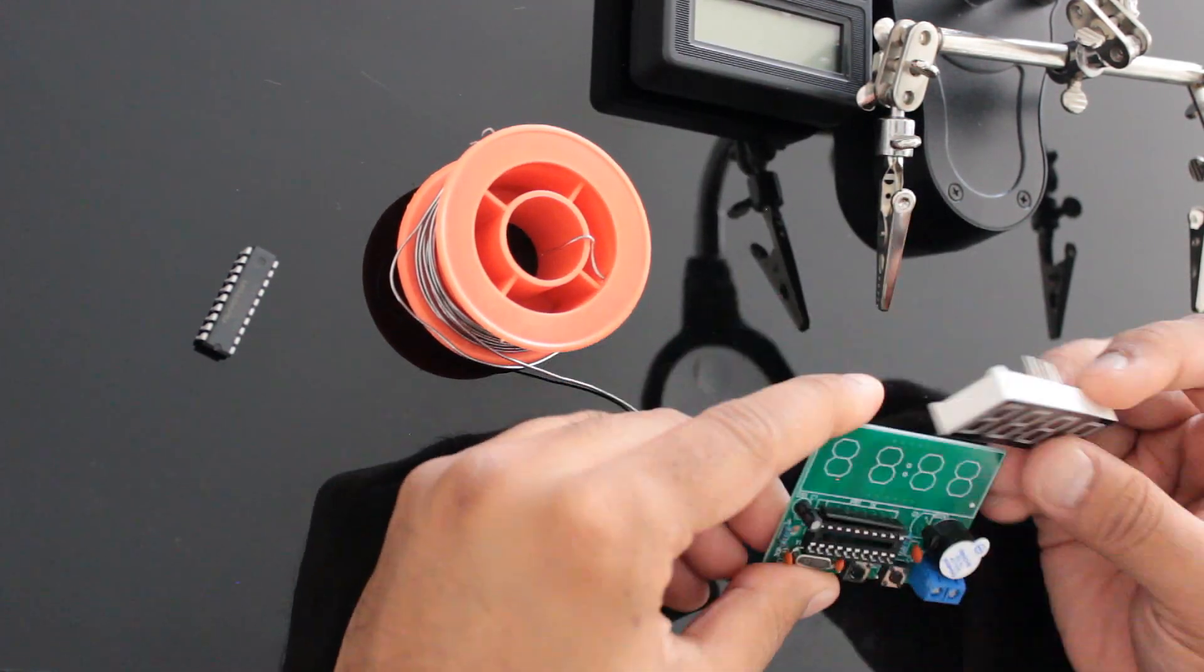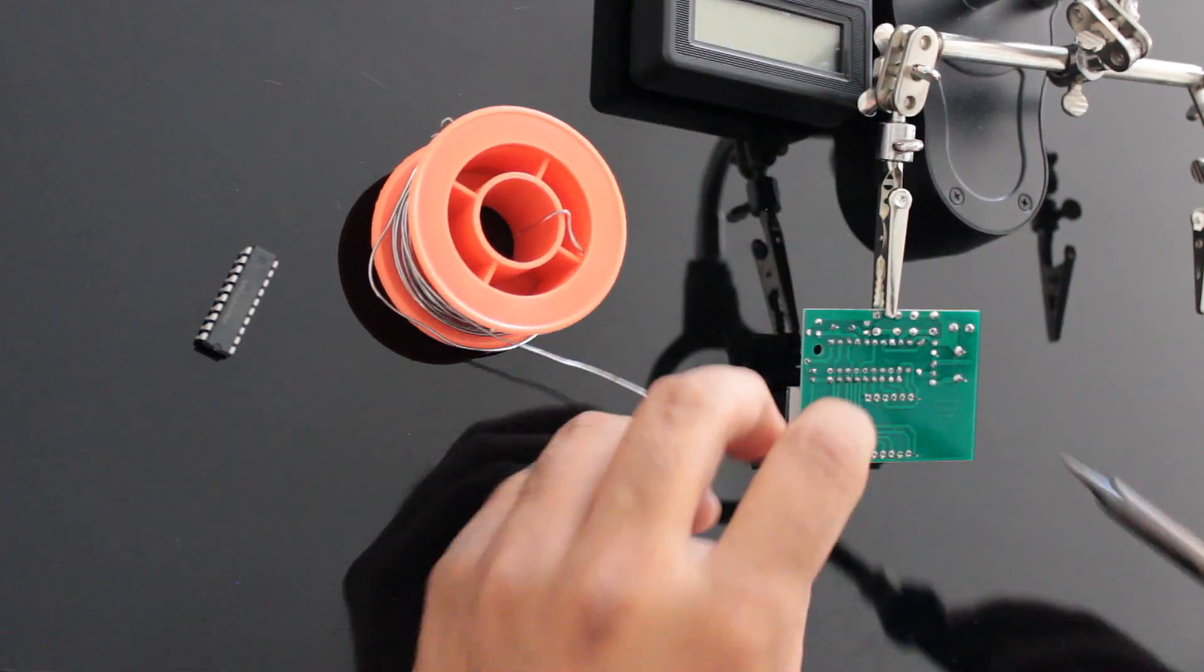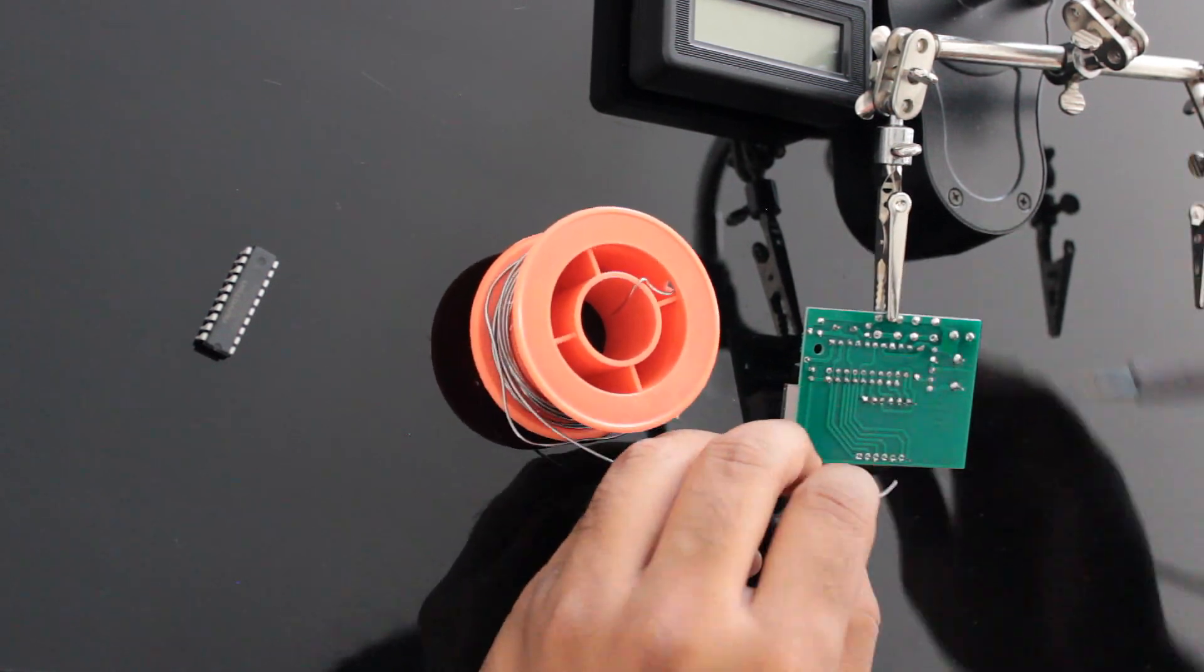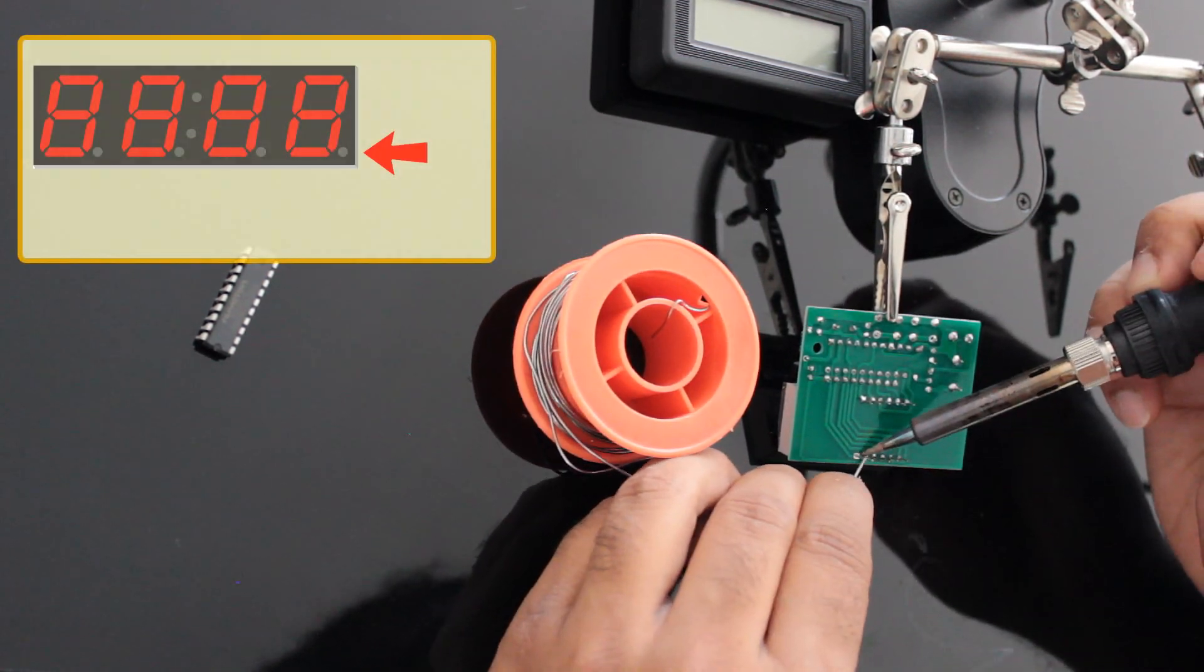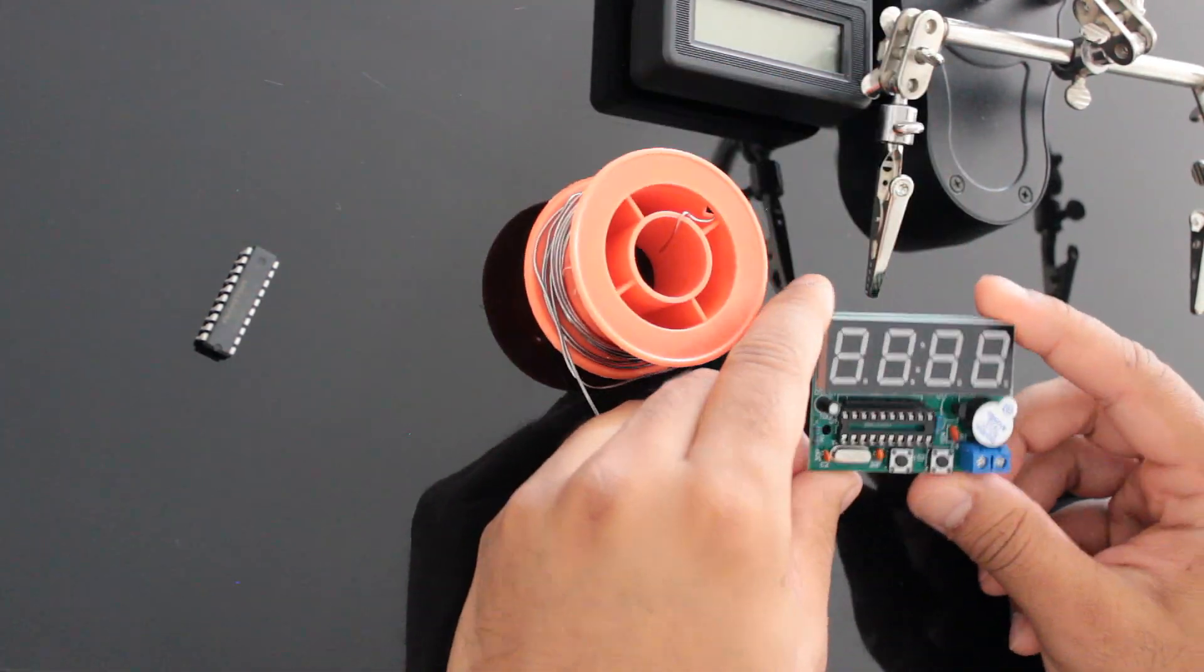Now the final bit, let's solder the 4-bit 7-segment display and install the AT89C2051 IC to the socket. Make sure when you solder the 7-segment, the dot on the bottom right corner matches the dot on the board. These displays consume a hell lot of current.